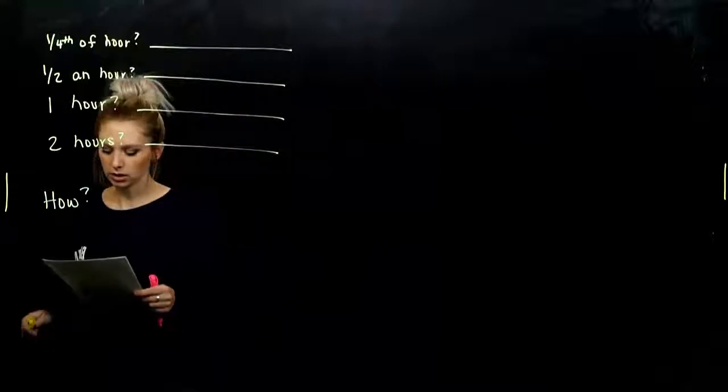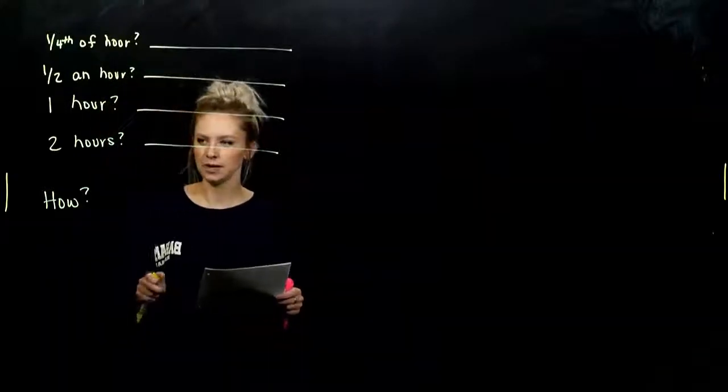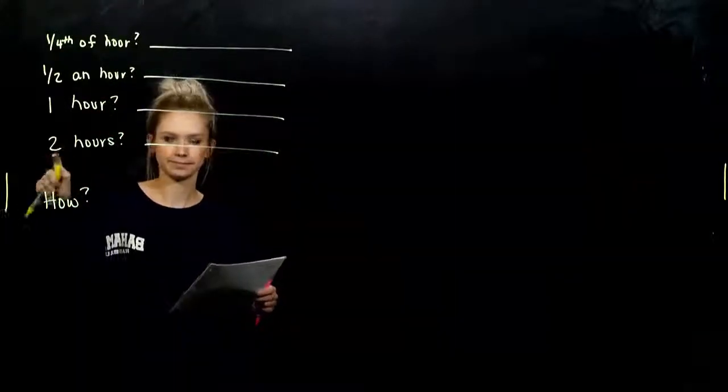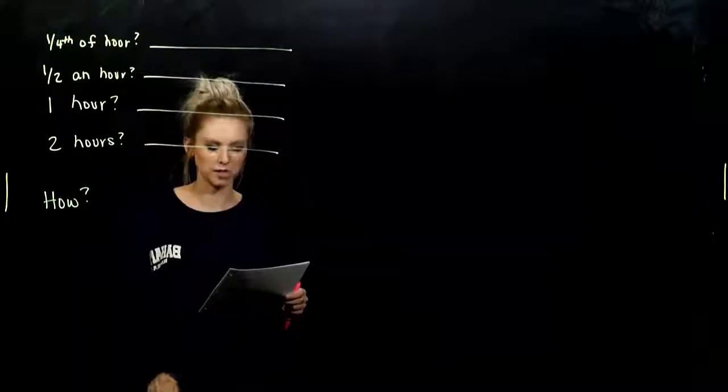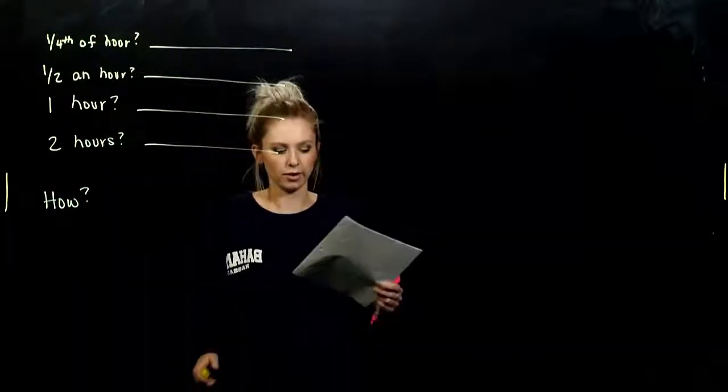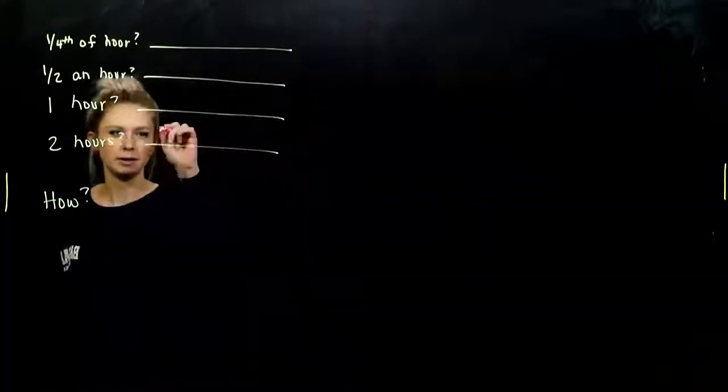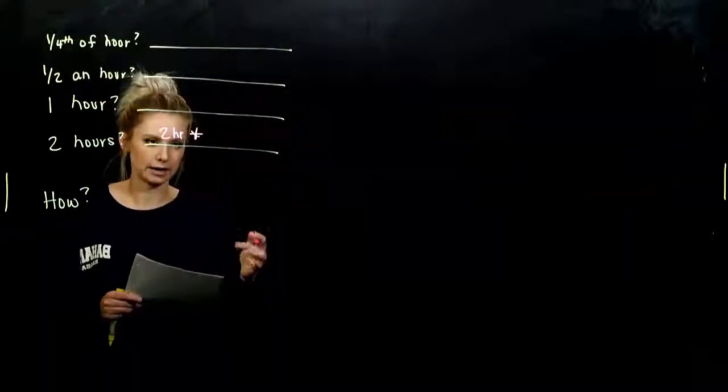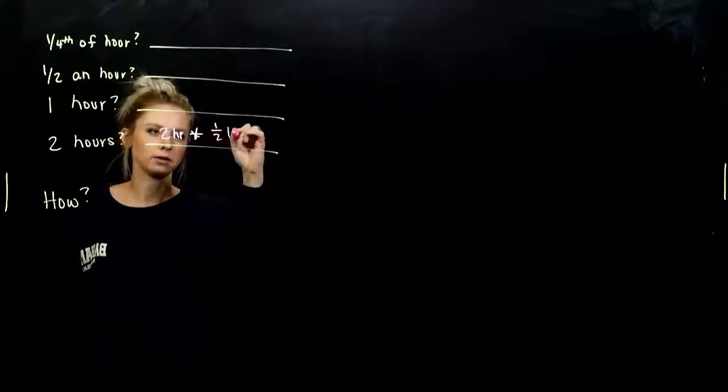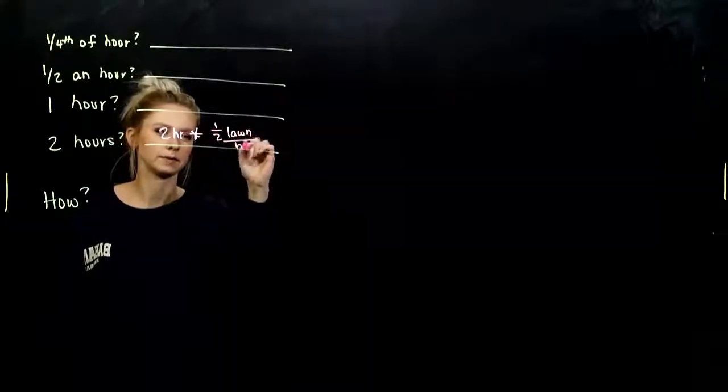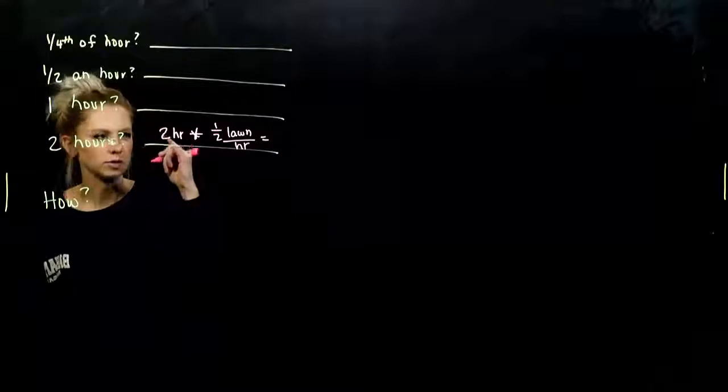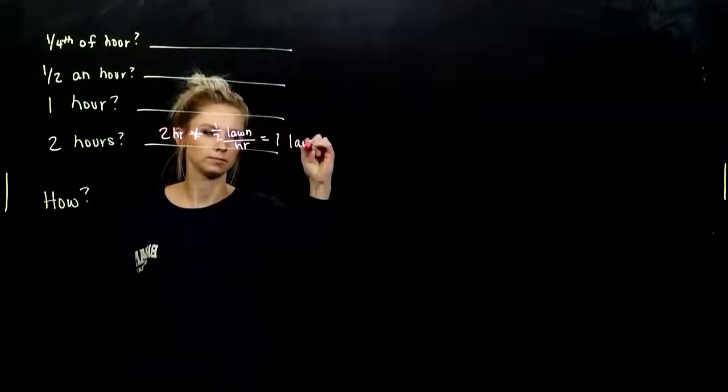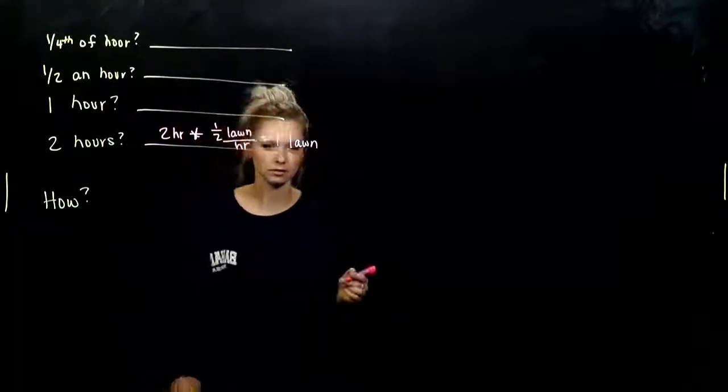I can mow half a lawn in one hour. If I work for two hours, how much of the lawn is going to be mowed? The entire thing. Since I know my two hours times my rate, how fast I can actually mow the lawn, I've got half of the lawn per hour, gives me two times a half, one. One lawn. The entire thing is going to be done.